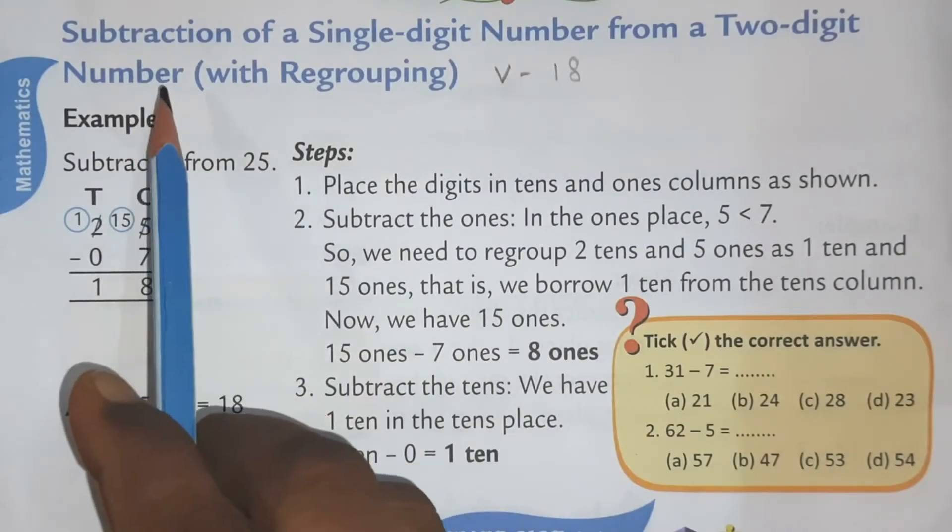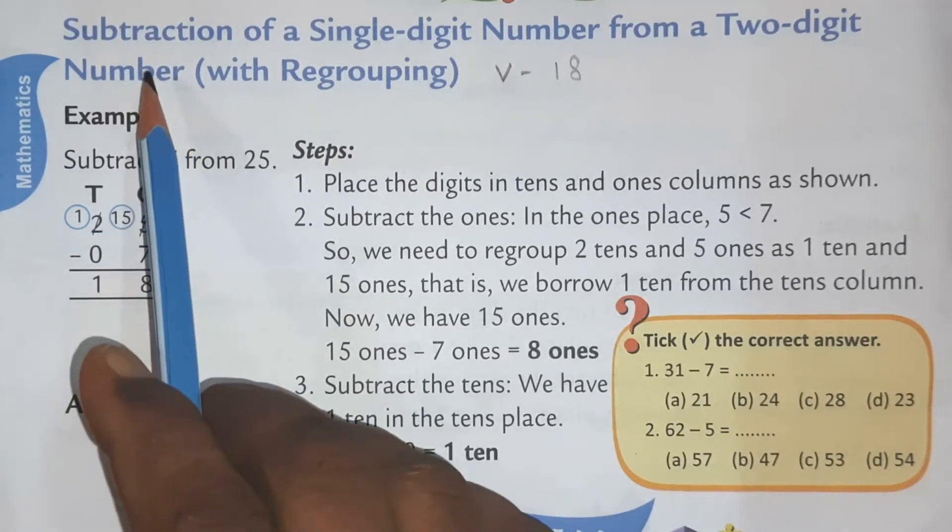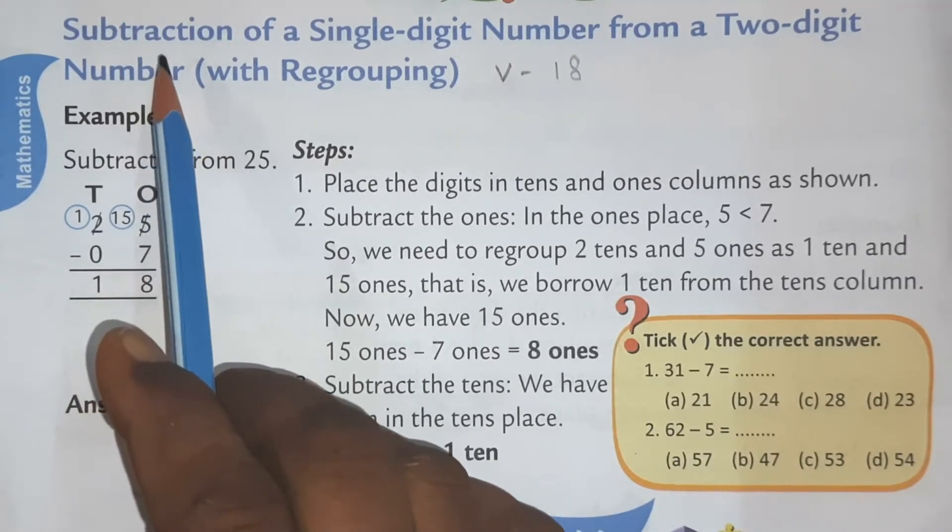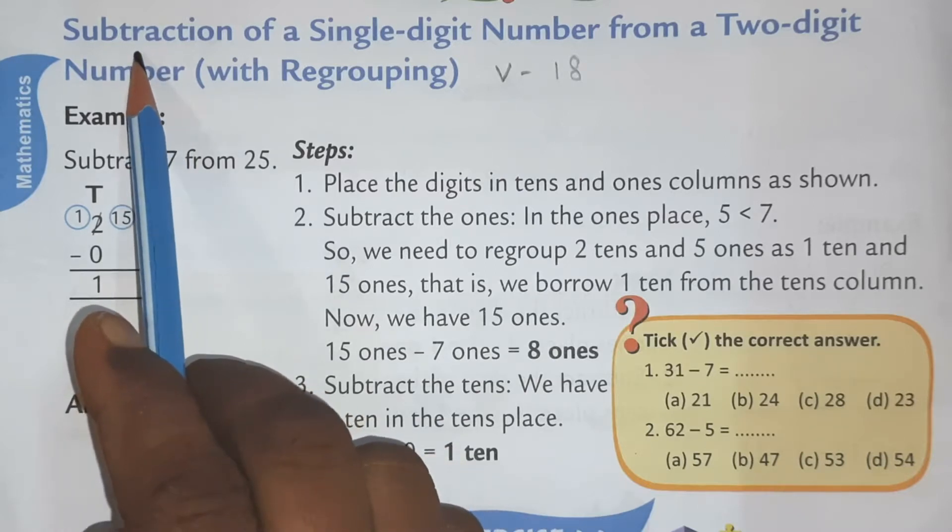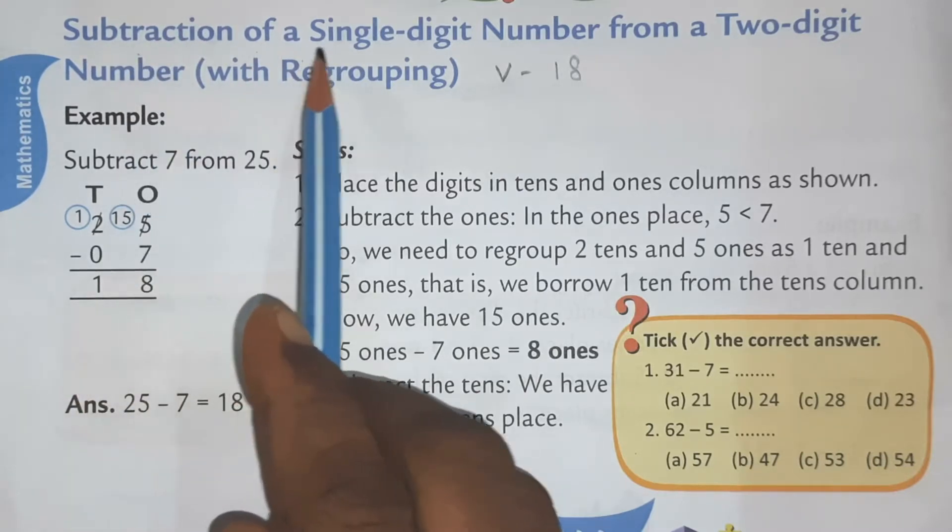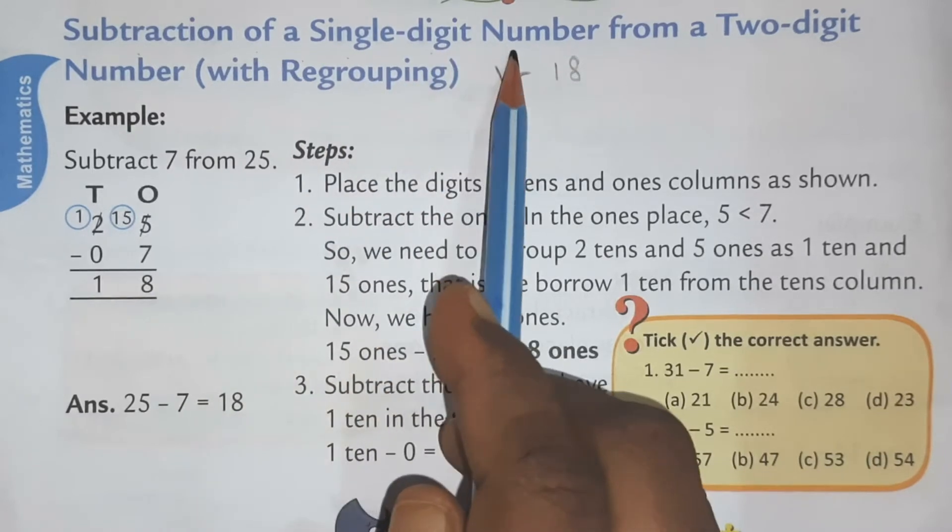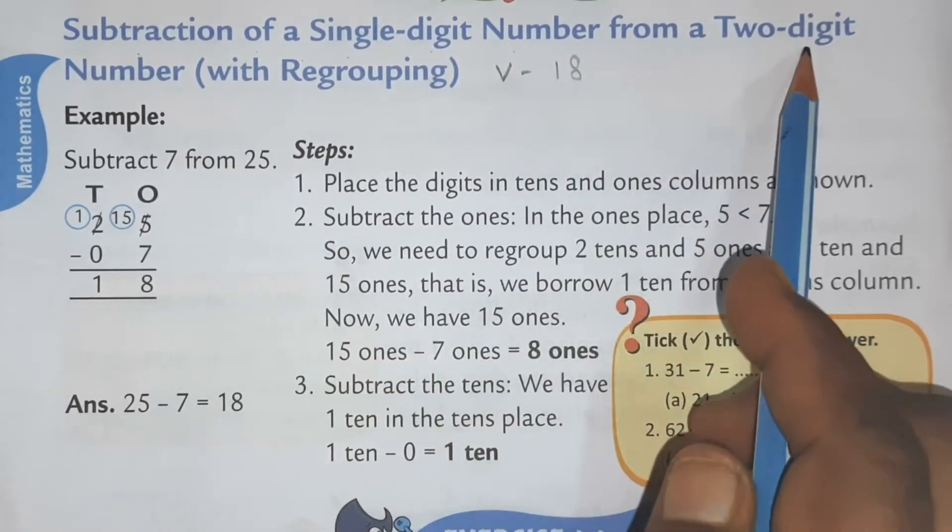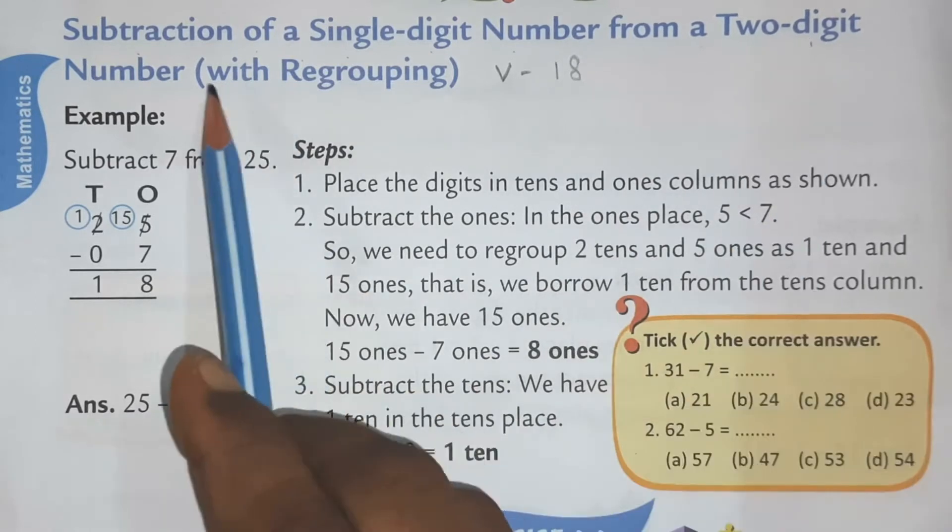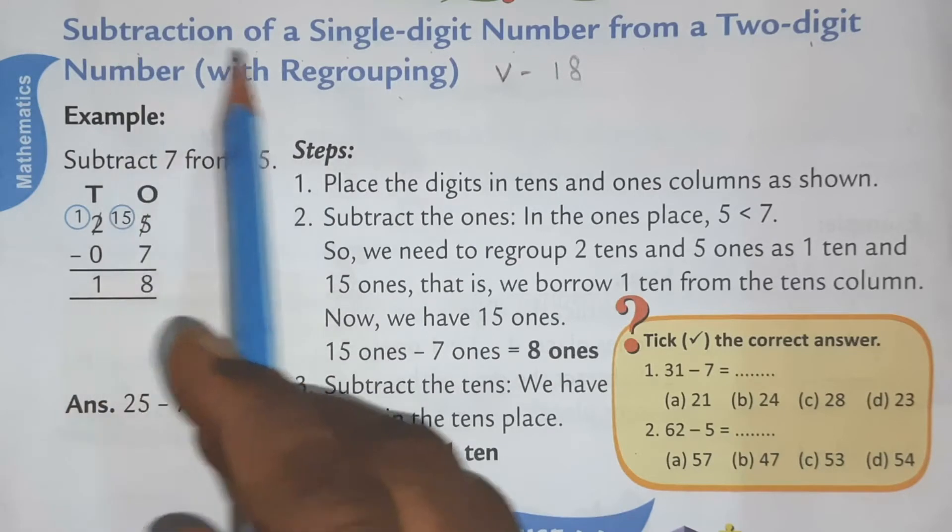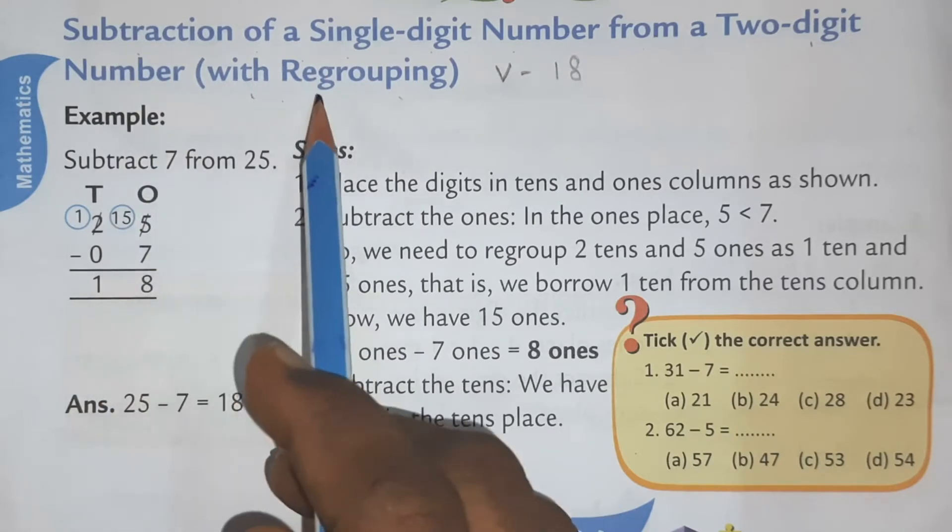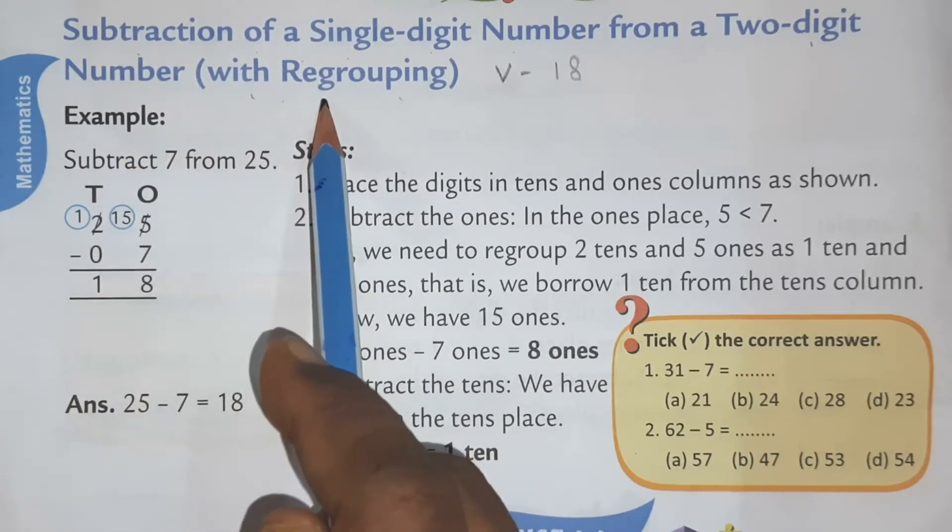Alright children, today we are going to learn in subtraction one more step further. Now let's have a look at this subtraction of a single digit number from a two digit number with regrouping. Last time we have also done the same but without regrouping. Today we are going with regrouping.